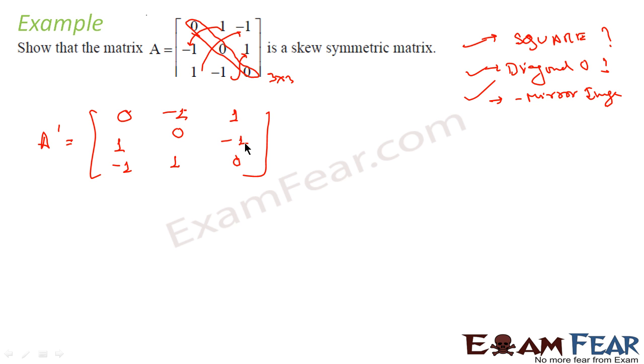Minus 1 becomes 1, 1 becomes minus 1. So I can say that this is nothing but minus A. Thus it is an example of a skew symmetric matrix.